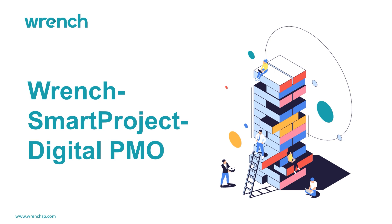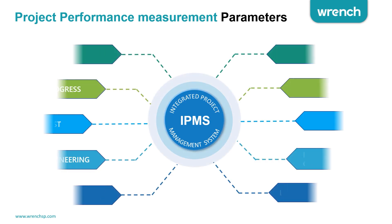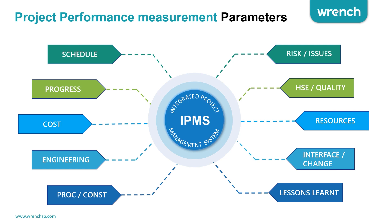For monitoring the performance of a project, we have identified 10 parameters which need to be monitored and controlled as the project progresses through the various phases of its lifecycle. These include the schedule, the progress, cost, and the deliverables of engineering, procurement, and construction.